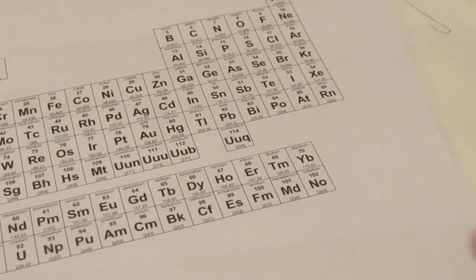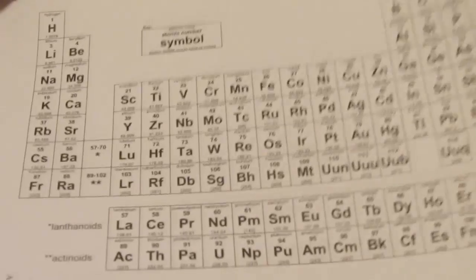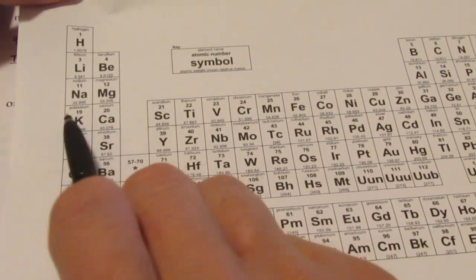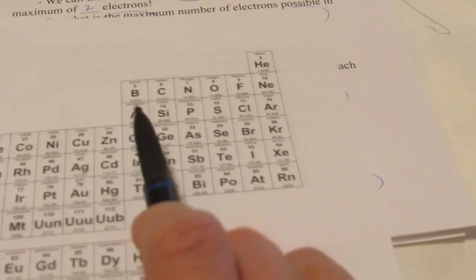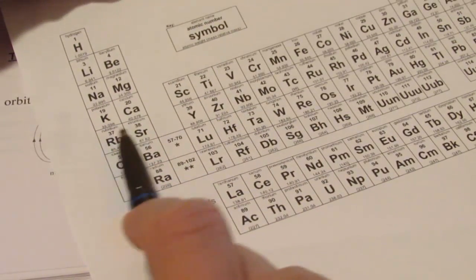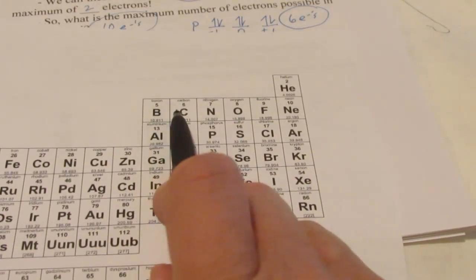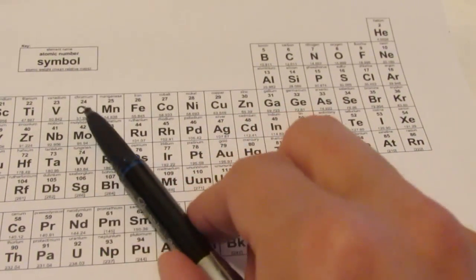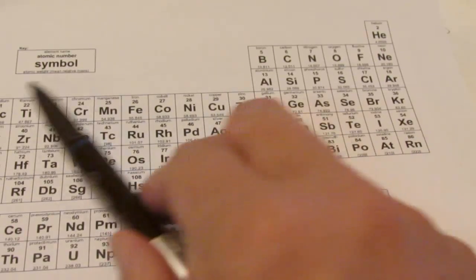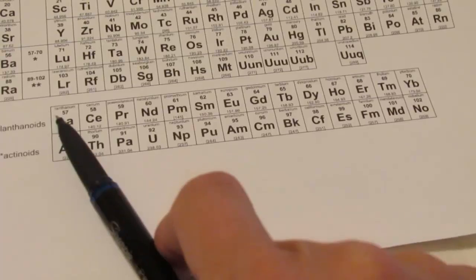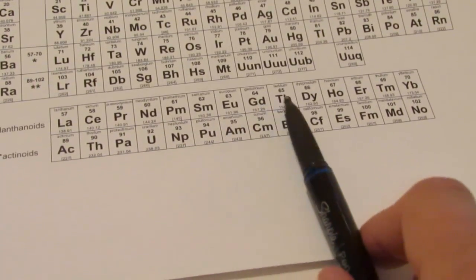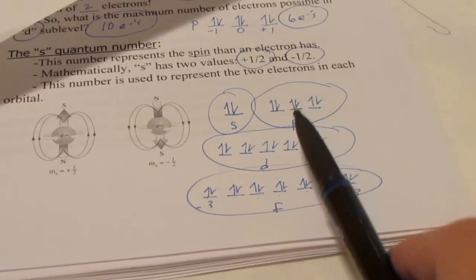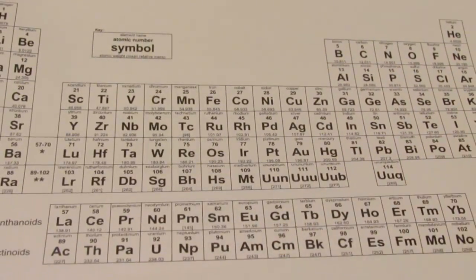Now the really cool thing about the periodic table is it reminds us of this configuration. The periodic table is broken up into certain sections: the first section is two atoms wide; the section on the right is six atoms wide; smack in the middle we have ten across; and on the bottom there are fourteen across. So we see that pattern of two, six, ten, fourteen repeating itself on the periodic table — and in the next videos we will learn why.